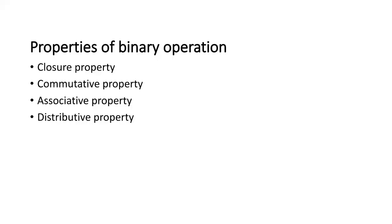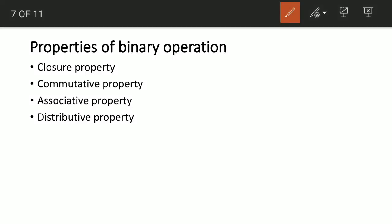Hello everyone. In this video we are going to be looking at properties of binary operations, and here we see four properties. The first is called the closure property, which is what we are going to be focusing on in this video. The second is commutative, the third associative, and the fourth distributive.